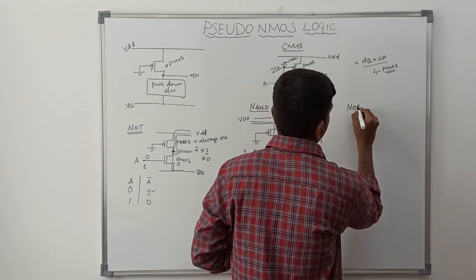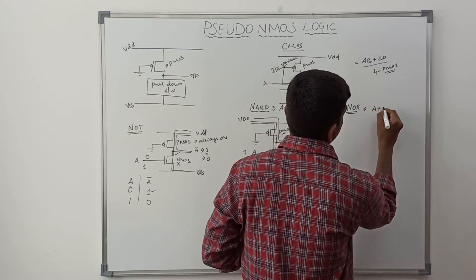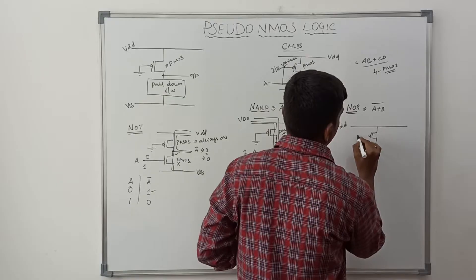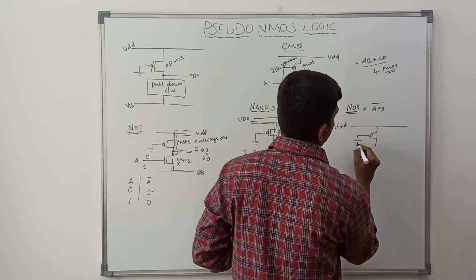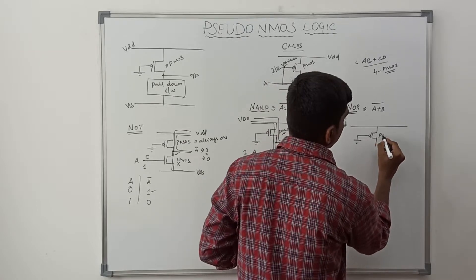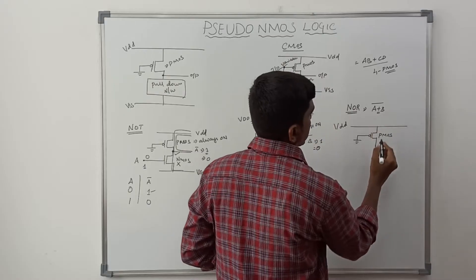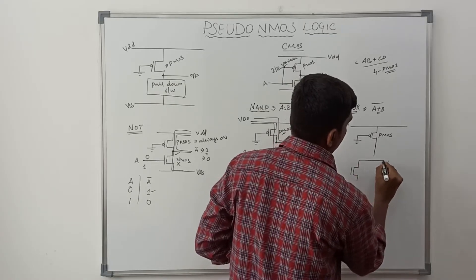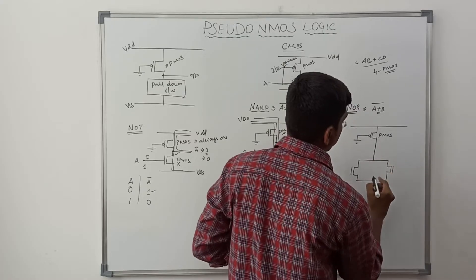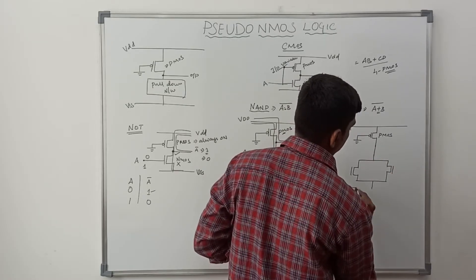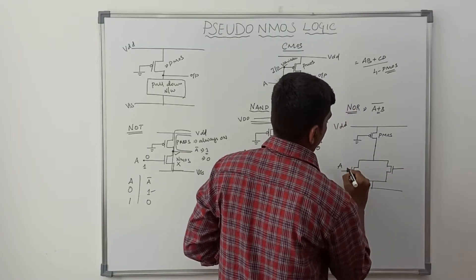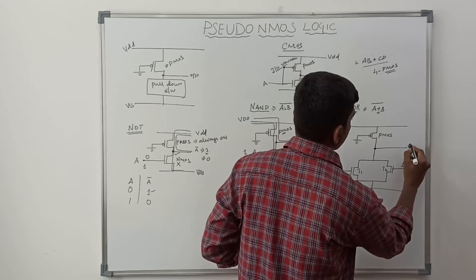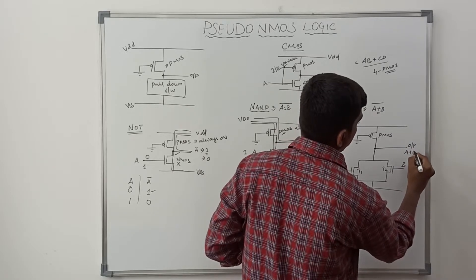Now I am going to draw the NOR gate. The Boolean expression is A plus B, whole bar. VDD is at the top. In pseudo-NMOS, only one PMOS transistor is needed, and the gate of the PMOS is connected to ground. The plus operator means NMOS transistors are connected in parallel. Inputs A and B connect to T1 and T2 respectively. Output is taken between the PMOS transistor and the parallel NMOS pull-down network.